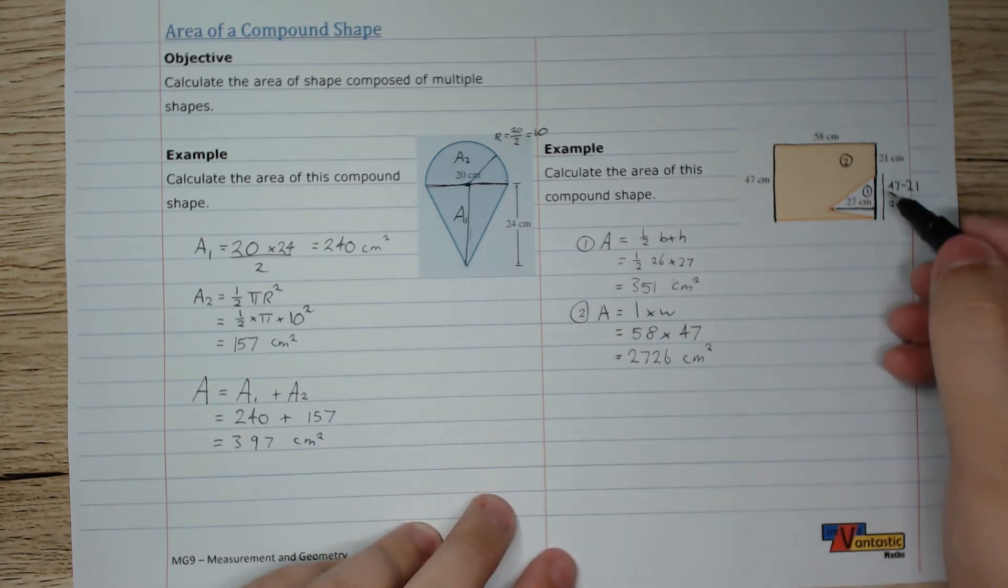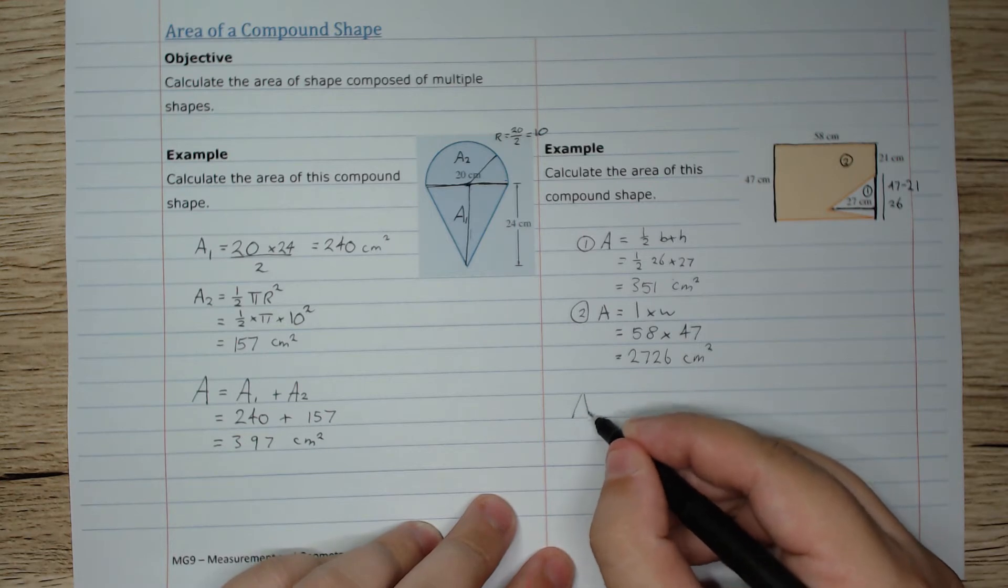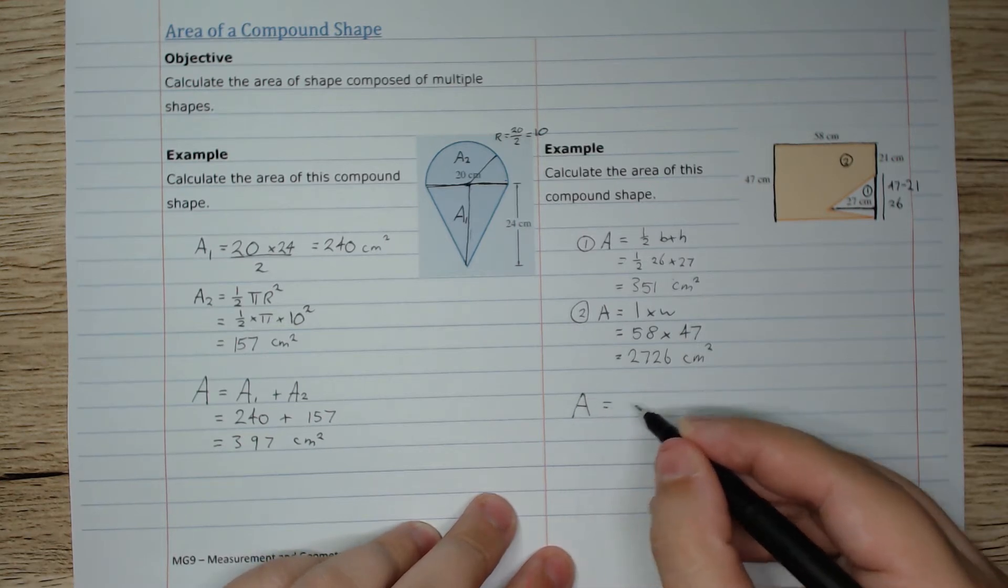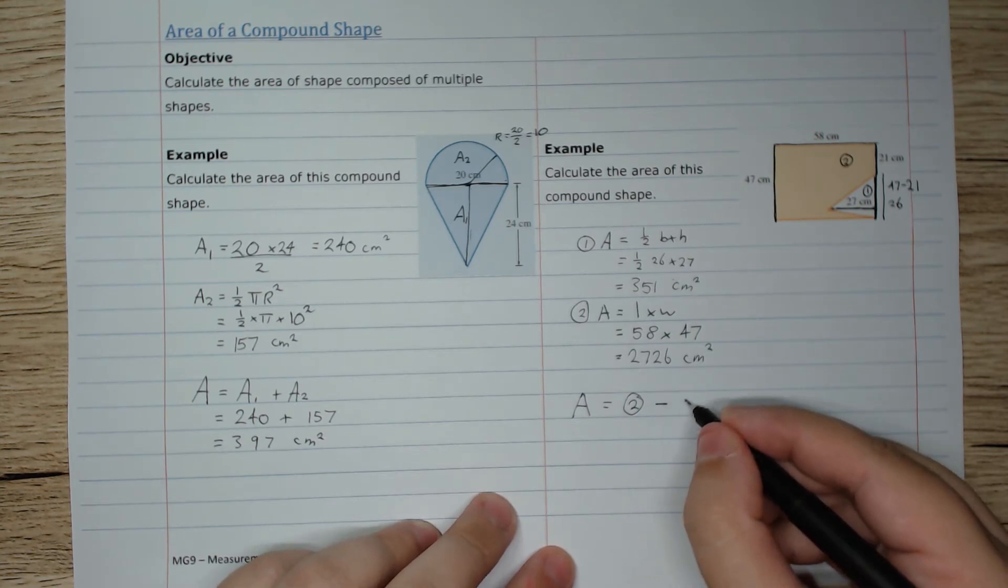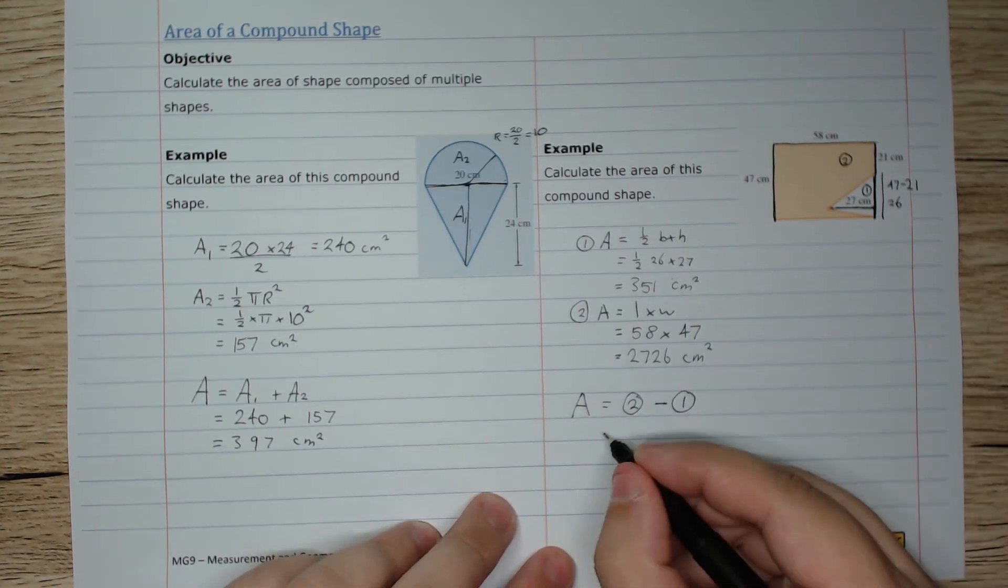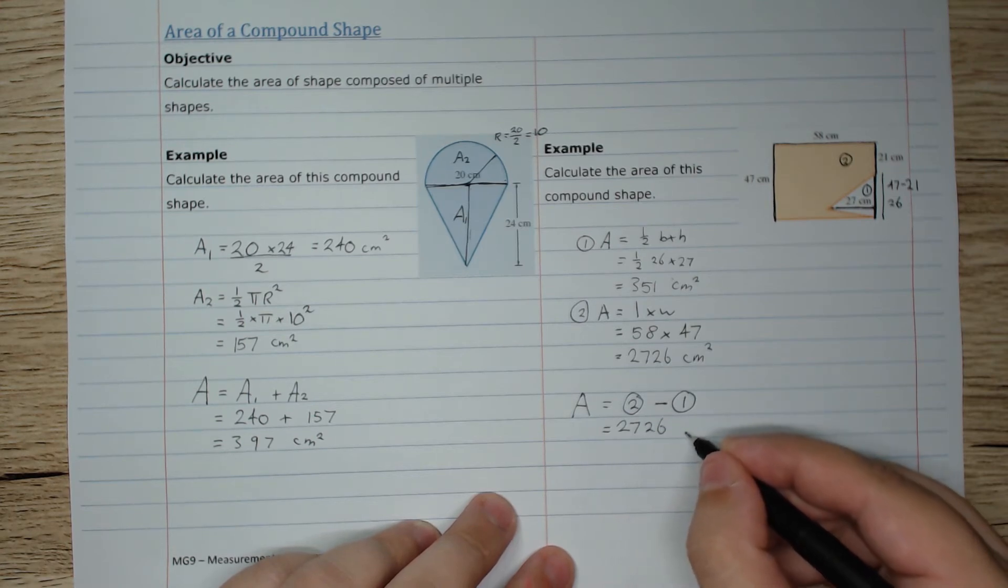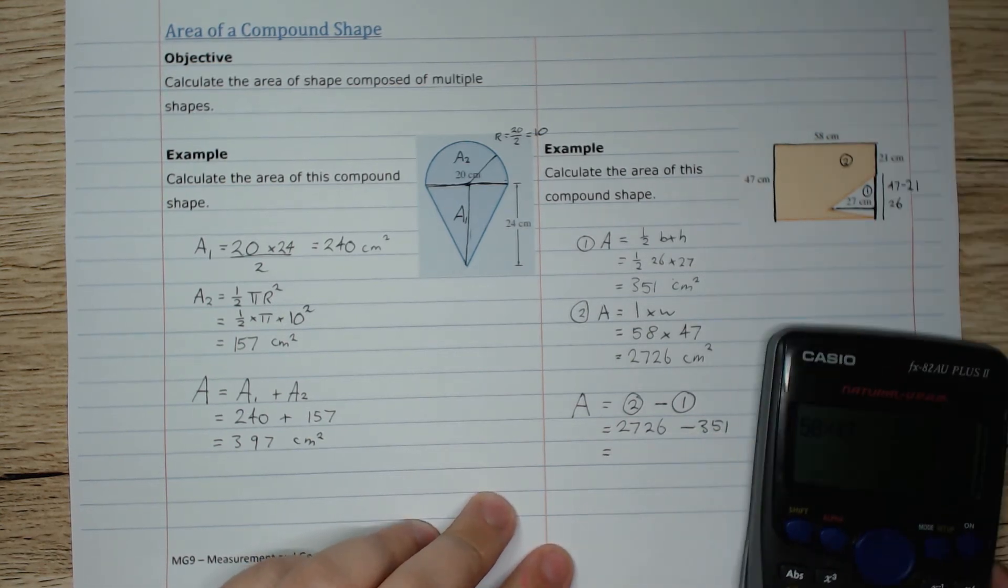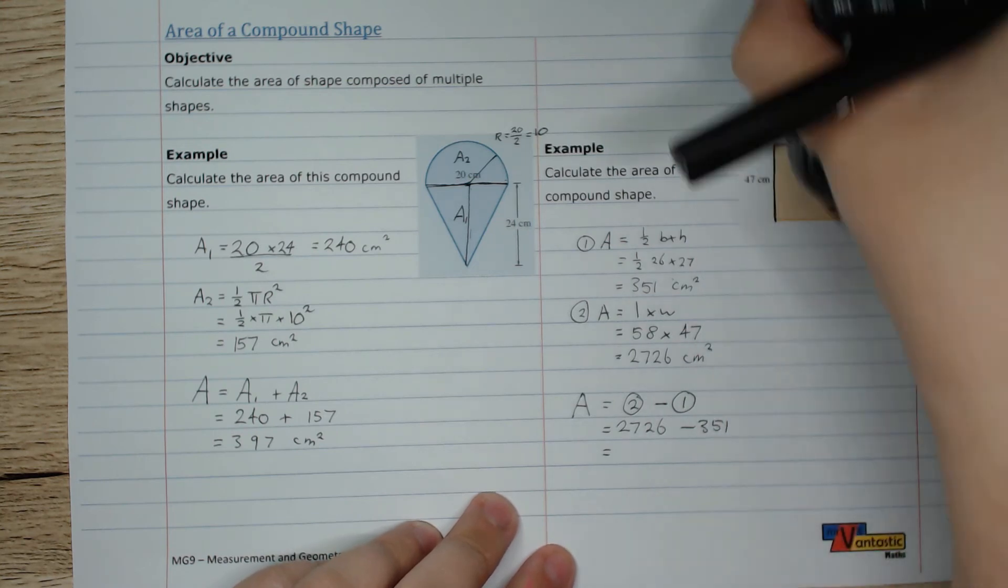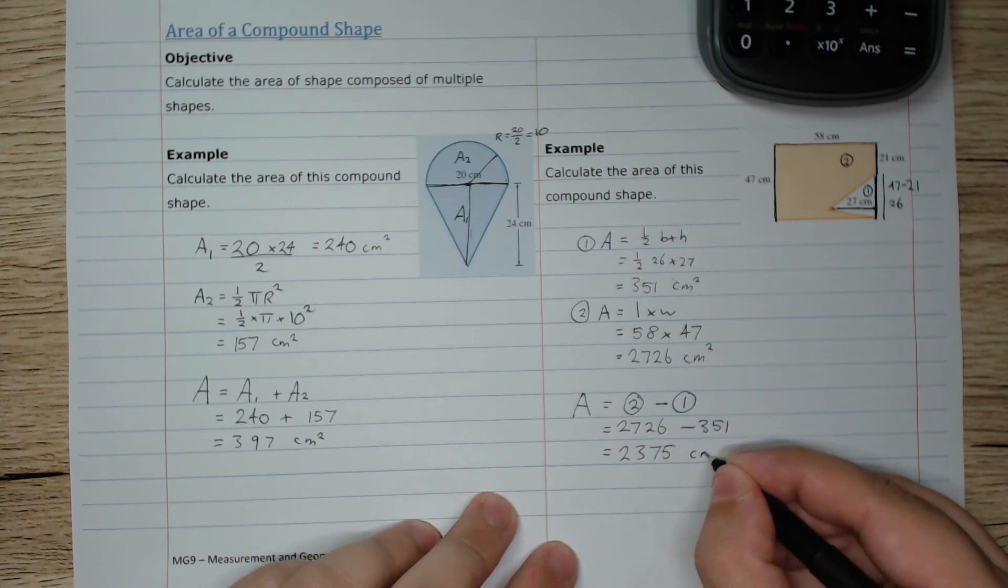And so because we're taking this away, we're cutting this shape out, our total area is going to be the area of the rectangle, which we label as area two, minus the area of the triangle, which we label as area one. So it's going to be 2726 minus 351, and that is equal to 2375 square centimeters.